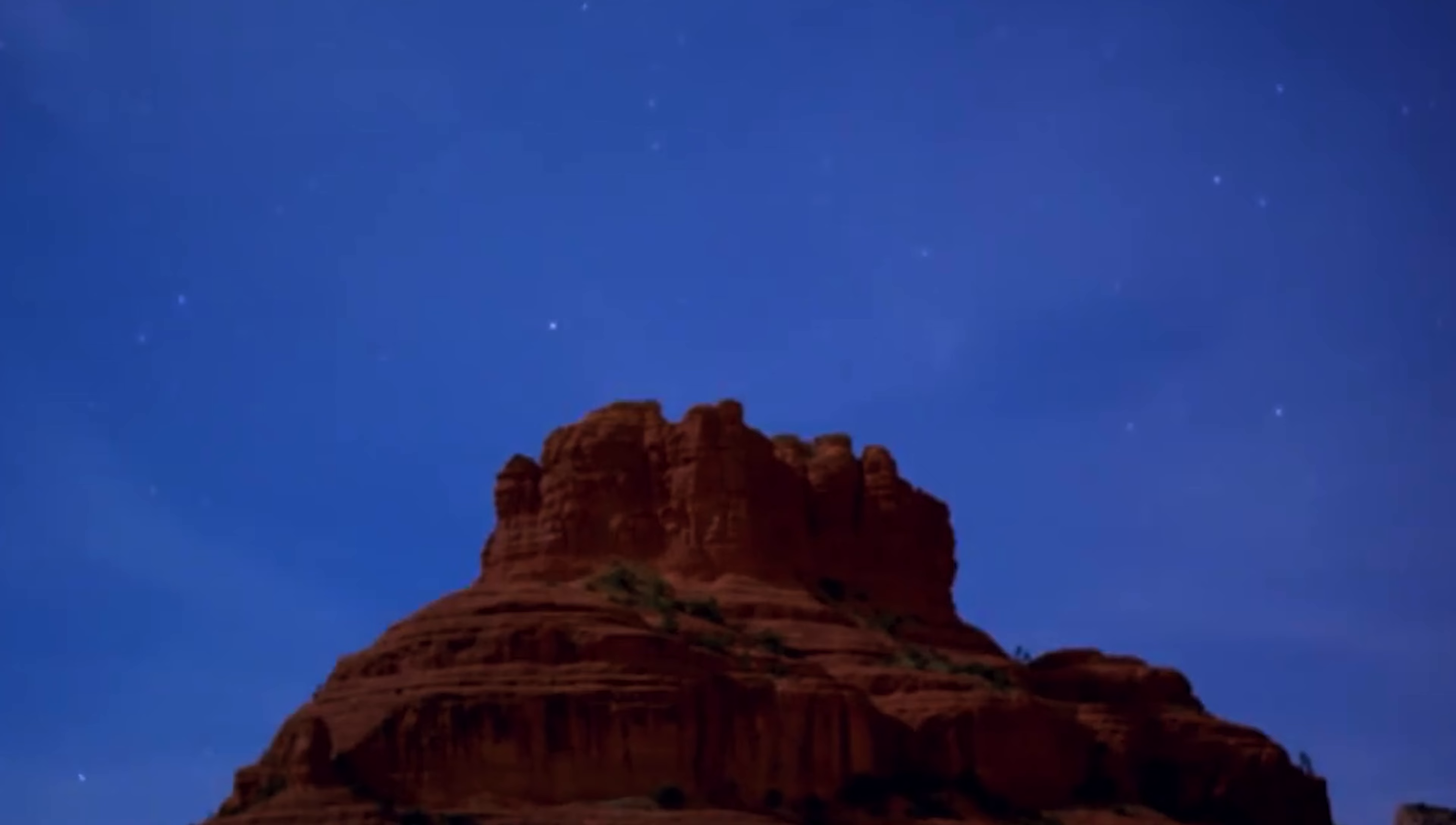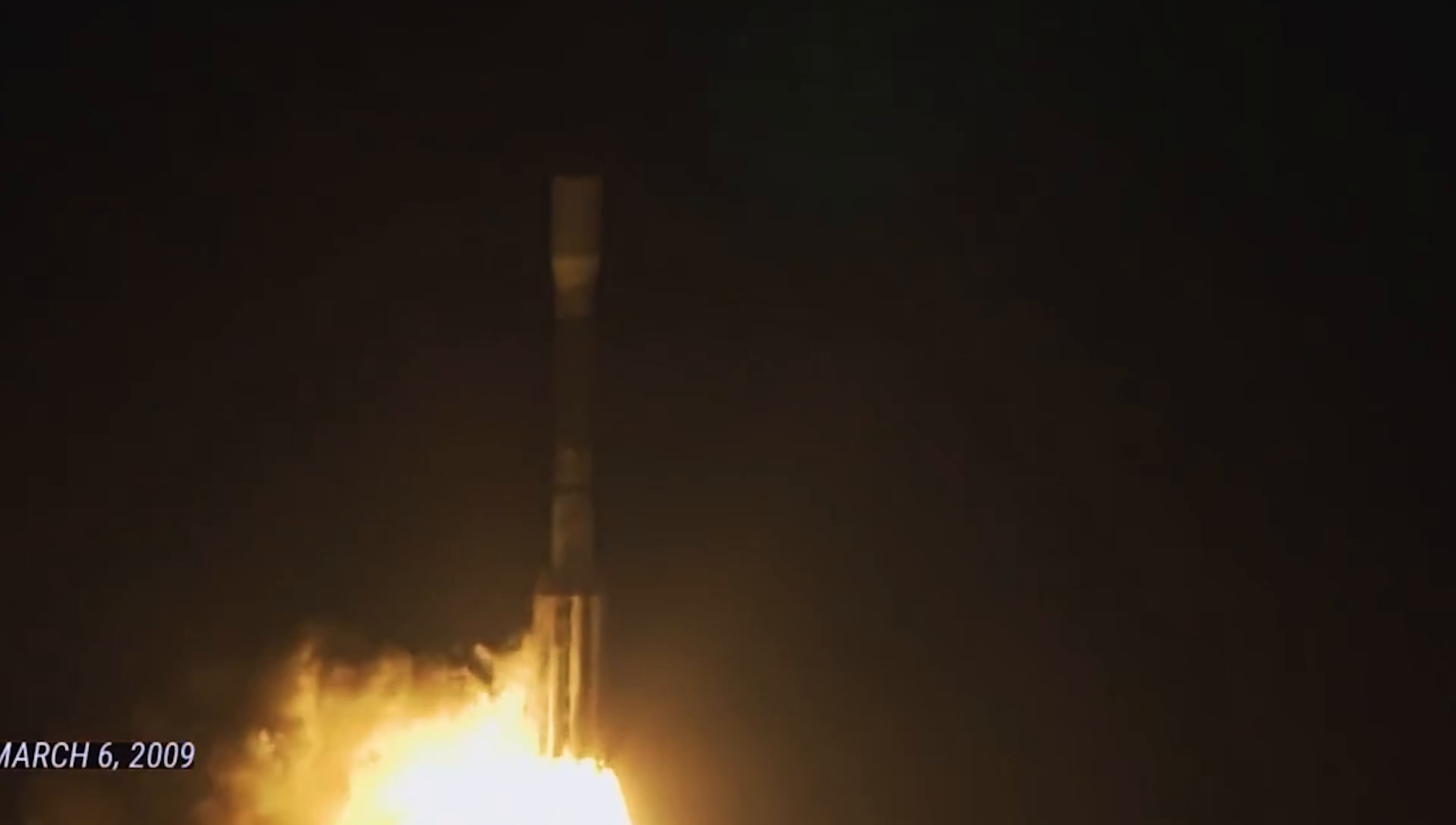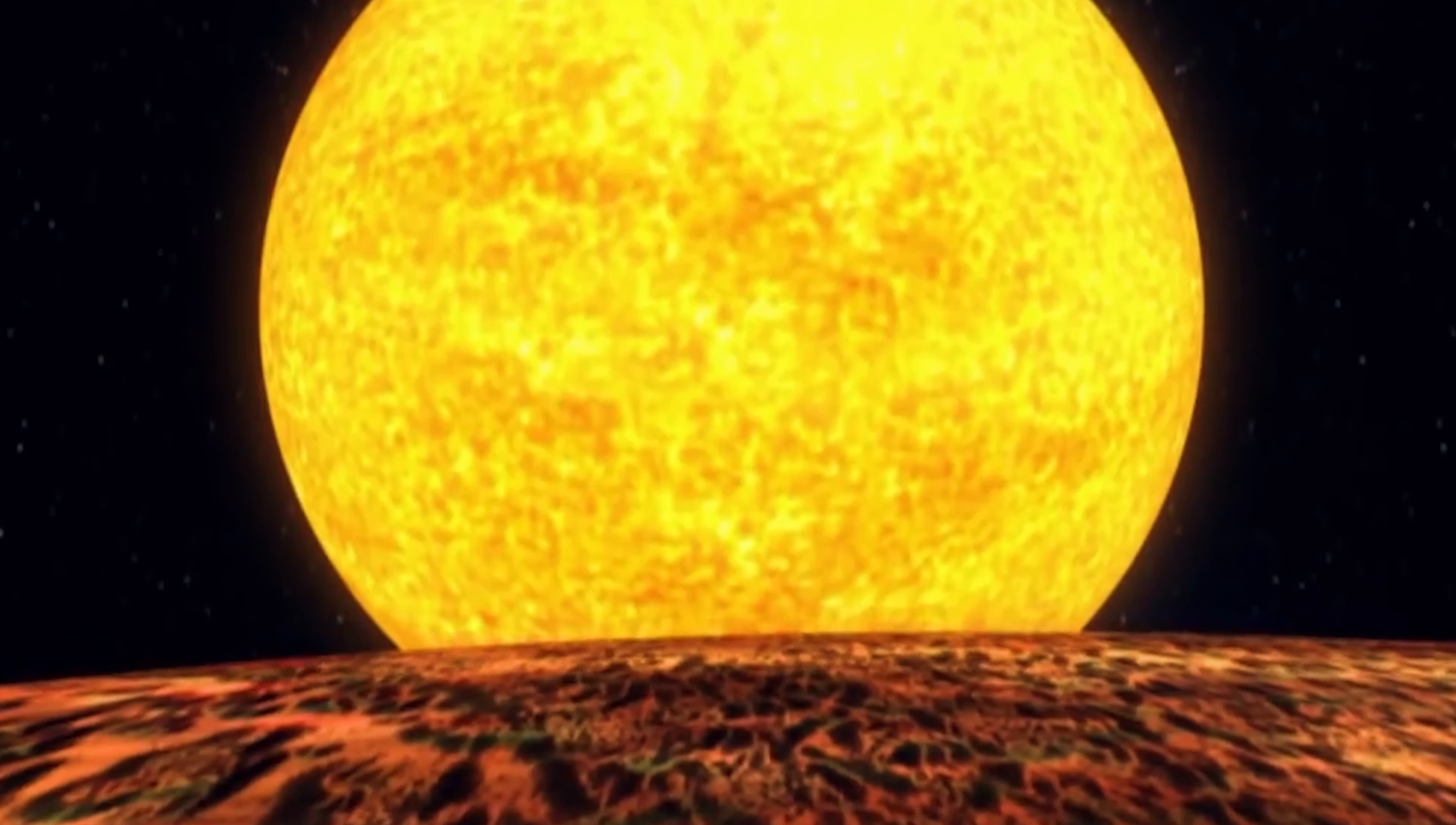These measurements were sent to Earth, where they were analyzed to find periodic dimming caused by exoplanets crossing in front of their host stars. It was only possible to find planets whose orbits could be seen edge-on. The spacecraft, Kepler, looked at 530,506 stars and found 2,662 planets.